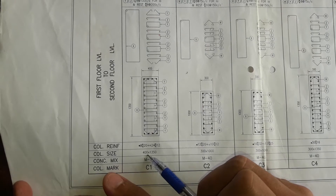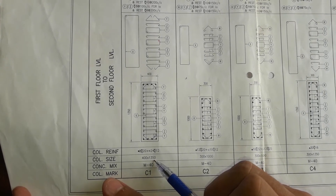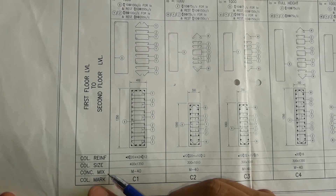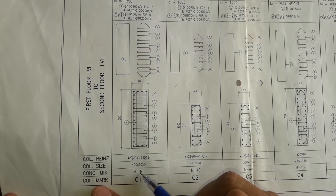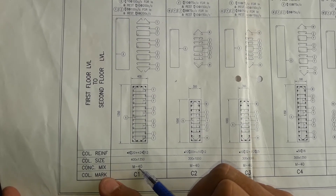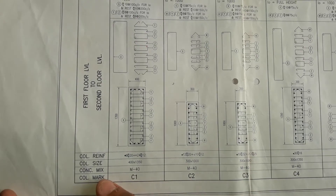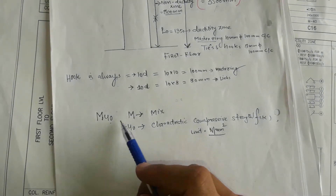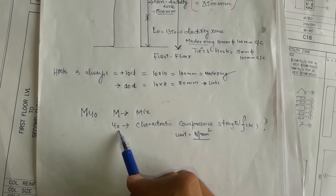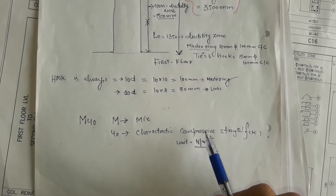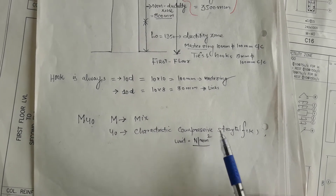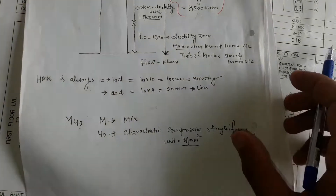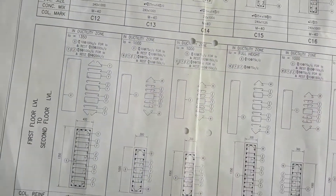The size of the column is 400 mm × 1350 mm. The concrete mix will be M40 — M40 means the characteristic compressive strength (fck) is 40 Newton per mm square.